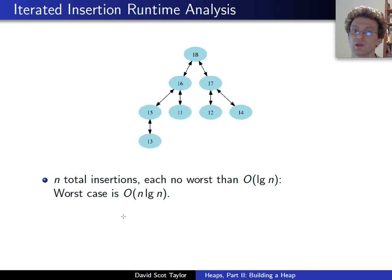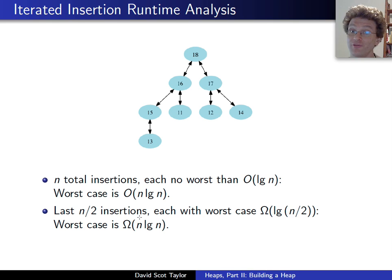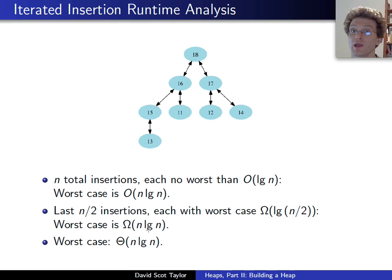For this method, we do n total insertions. For sure, each one is no worse than log n. An insertion on a heap with n values takes no more than log n time, so the worst case is no worse than n log n. Additionally, for the last half of the insertions, each can take up to time log n over 2, or log n minus 1. So for n over 2, that gives us a worst case time that actually is lower bounded by order n log n. So our worst case time for iterated insertion to build a heap is n log n.